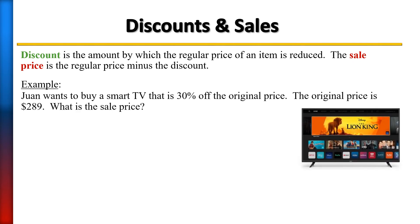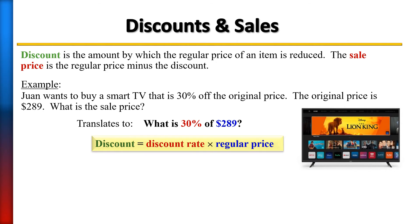Juan wants to buy a smart TV that's 30% off the original price of $289. What is the sale price? We need to find 30% of 289. Using direct translation: the unknown equals 0.30 times 289. Get your calculator out and compute 289 times 0.30 to find the discount amount.